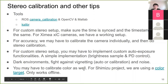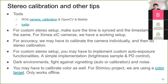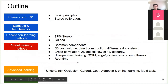You may also have to calibrate the color. For the Shimizu project, we used a color target — a printed paper-based color reference that you can use to track color after getting the images. That's basically the basics of stereo vision.